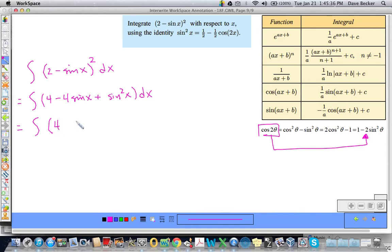this becomes 4 minus 4 sine X plus 1 half minus 1 half cosine of 2X dx. And we clean that up a little bit. We get the integral of, let's see, 9 halves, 4 plus 1 half minus 4 sine X minus 1 half cosine 2X. So we are almost done dx.